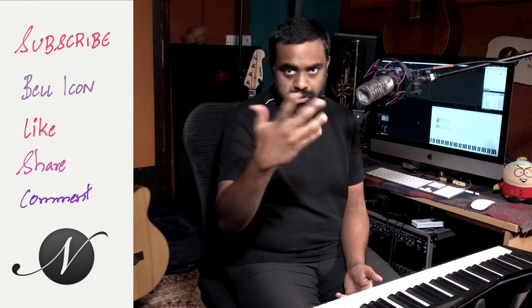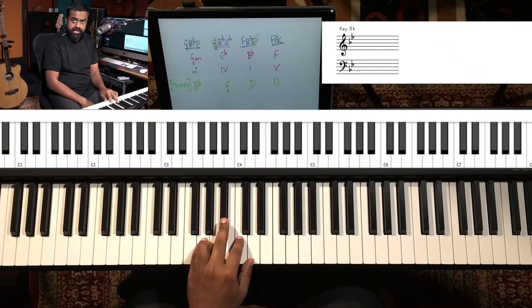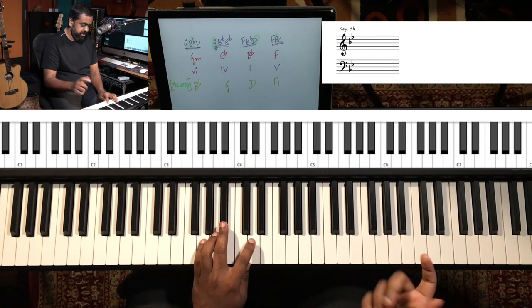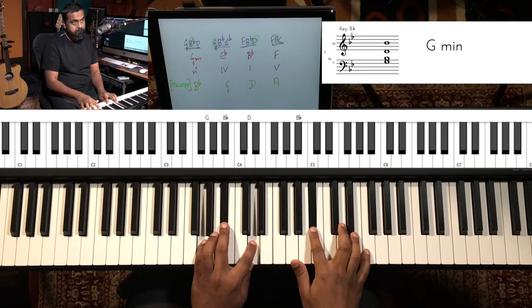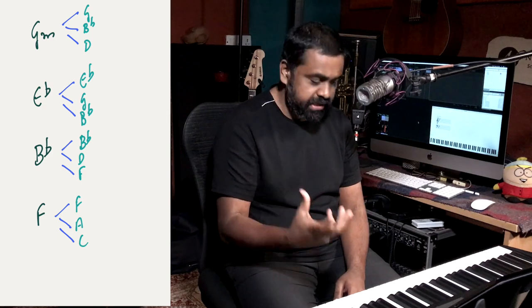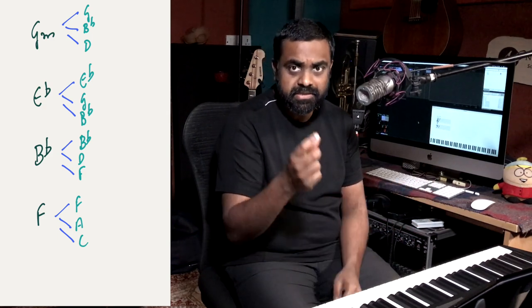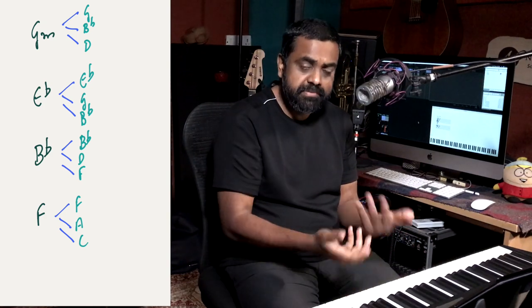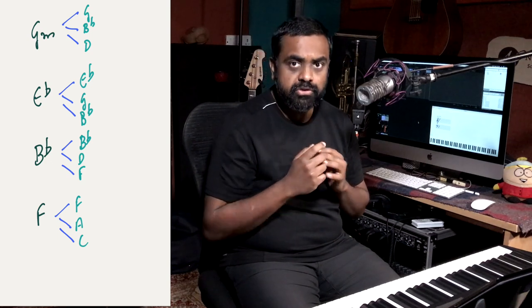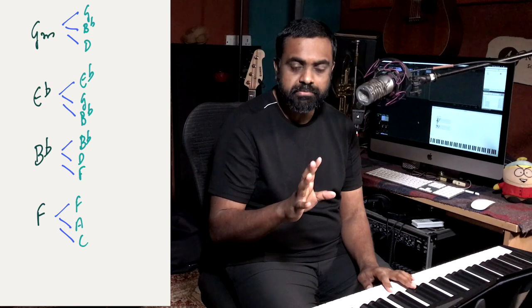The first chord, G minor, has three chord tones: G, B flat, and D. In your right hand, you can take one of those chord tones — just focus on one for now. I could take G, or I could take B flat. All of this sounds very pleasing to the ear because it's just common sense — the note of the melody is right there in the chord. The notes of the melody can thus be one of the notes of the chord.